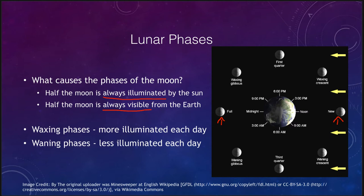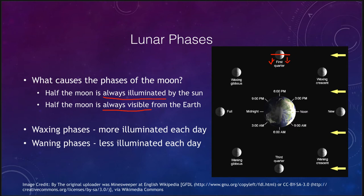The moon phases are caused by these two things: half the moon is always illuminated, and half the moon is always visible from the Earth. If you imagine drawing a line straight across the moon, this half is visible from the Earth. So at a first quarter moon, half of the moon is illuminated and we see half of that — a quarter of the moon appears illuminated, and a quarter pointing toward us is not illuminated.